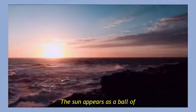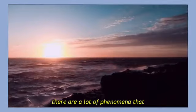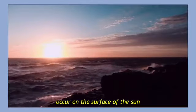The sun appears as a ball of glowing gas in outer space. There are a lot of phenomena that occur on the surface of the sun.